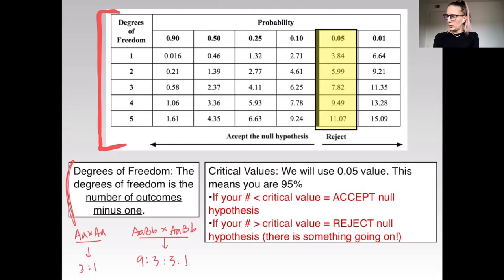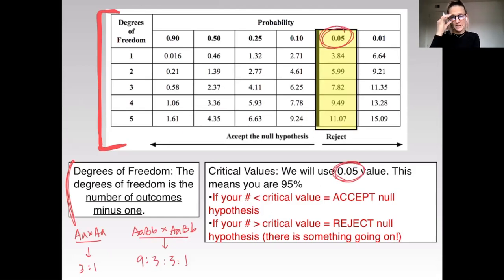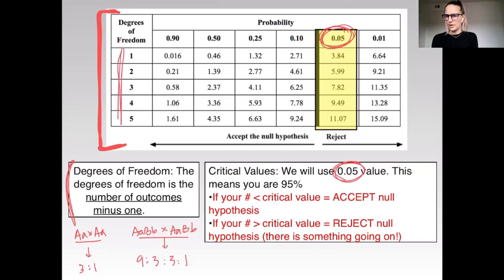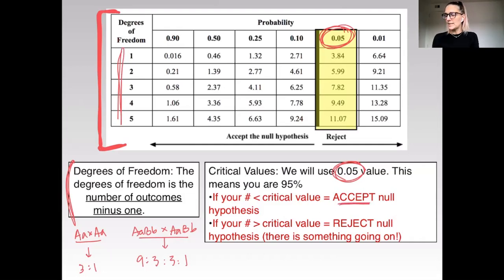The critical value here — we are always going to use this 0.05 value, which means that we are 95% confident in our results. You're always going to go to this 0.05 column, then look at which degrees of freedom you have, and find the corresponding number. If the number that you get for your chi-square is less than this critical number, you are going to accept the null hypothesis that there was no significant difference between expected and observed.